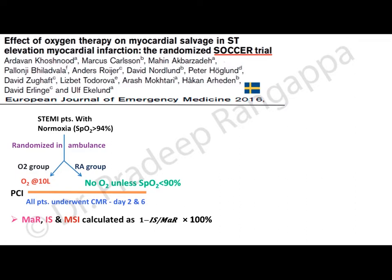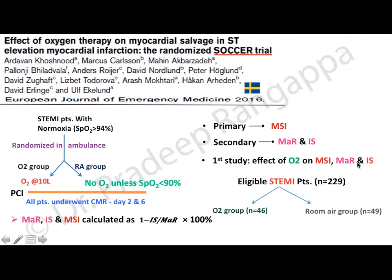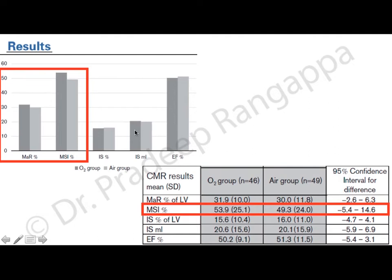Of 229 eligible patients, 46 were in the oxygen group and 49 in the room air group. The results showed that myocardial salvage index was slightly more in the oxygen group, but this was not statistically significant. The conclusions from the SOCCER trial were that in normoxic ST-elevation MI patients, oxygen supplementation versus room air had no effect on myocardial salvage index, myocardium at risk, or injury score.